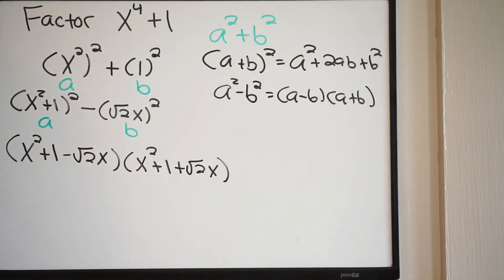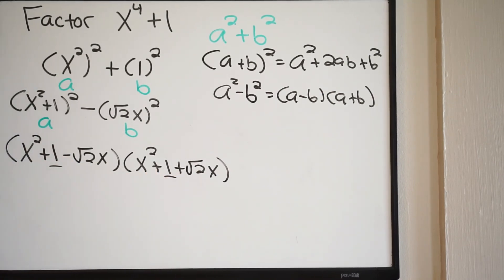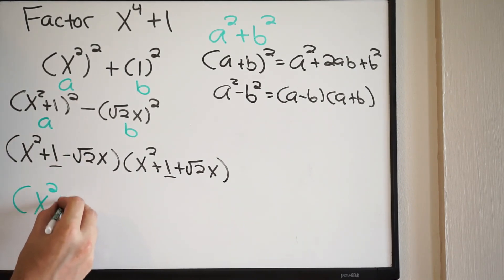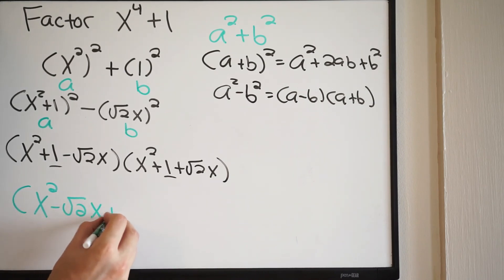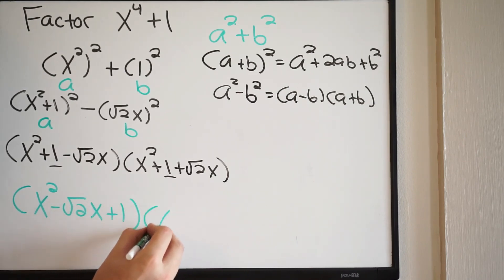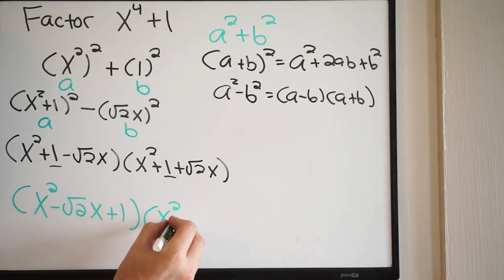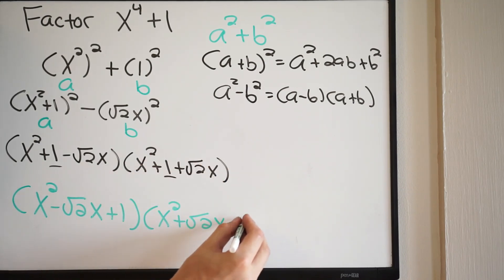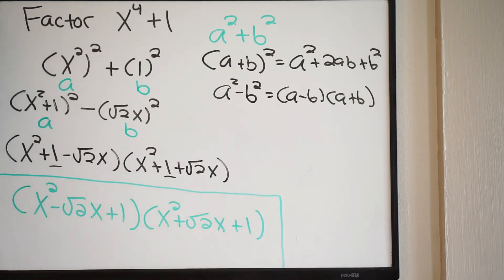We want to write our constants at the end, so rewriting for our final answer we get: (x squared minus square root of 2 times x plus 1) times (x squared plus square root of 2 times x plus 1). This is now fully factored — we just factored x to the fourth plus one.